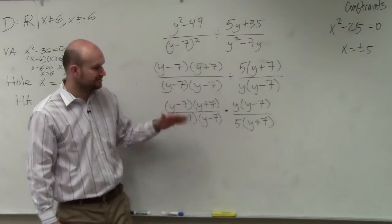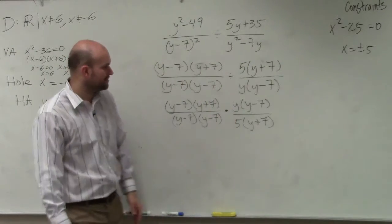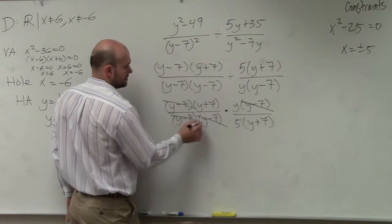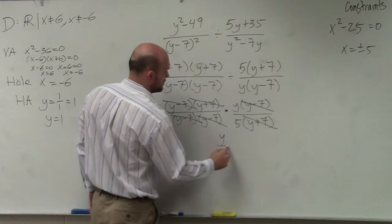Now we're multiplying, so we multiply across. So now we just apply the division property. We just see what's exactly the same on the numerator and the denominator, and we're left with y over 5.